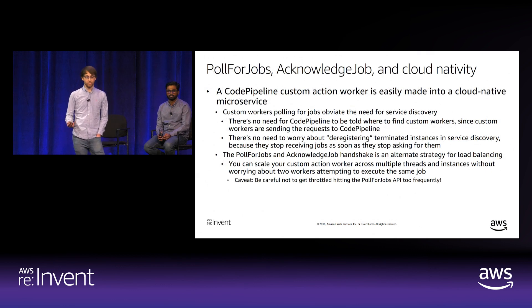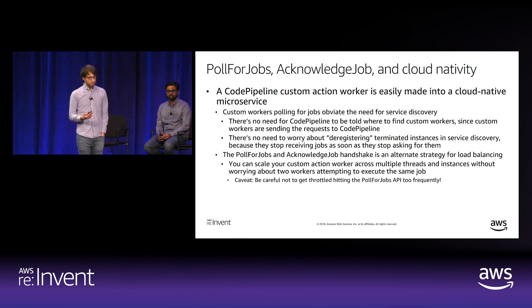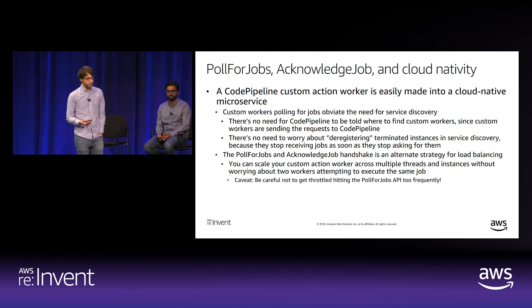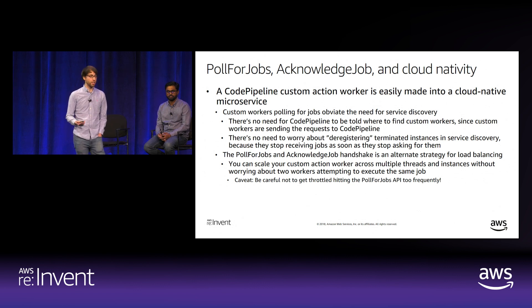Custom action workers are naturally cloud-native microservices. Workers poll CodePipeline—there's no need for CodePipeline to know where to find your workers, so no service discovery is needed. Terminated instances stop receiving jobs as soon as they stop asking for them, so there's no need to deregister instances. Tools like Eureka and Consul are not needed.